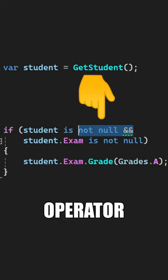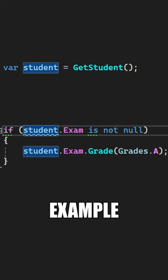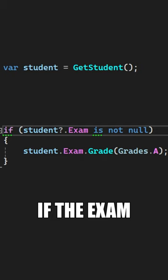The null conditional operator in C# can help you simplify your code. For example, you can use it here to conditionally access the student before checking if the exam is not null.